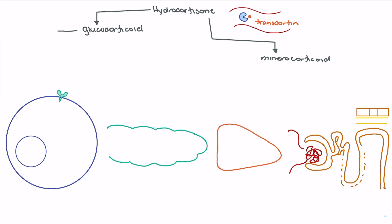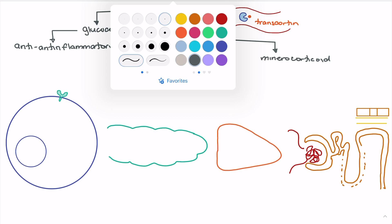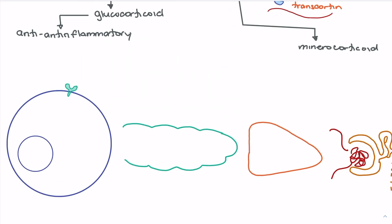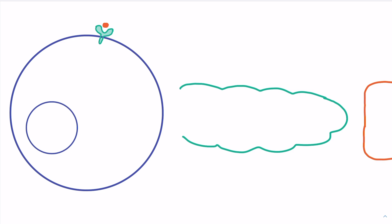One of the most common uses for hydrocortisone is based on its anti-inflammatory effects. Glucocorticoids like hydrocortisone are going to have an anti-inflammatory impact. If we take a closer look at the cell, we can investigate why. When hydrocortisone reaches the cell, it will bind to the glucocorticoid receptor, and this binding is going to trigger a number of intracellular signaling activations that reduce inflammation.